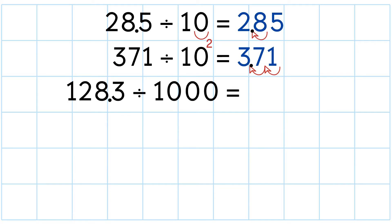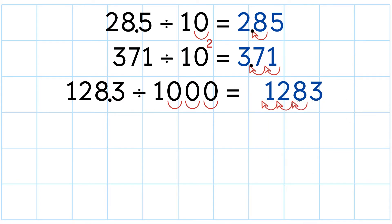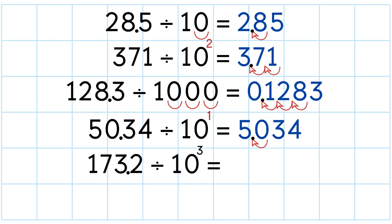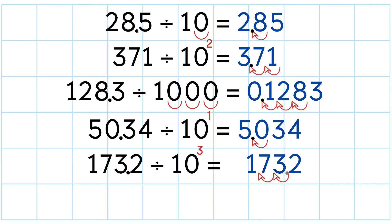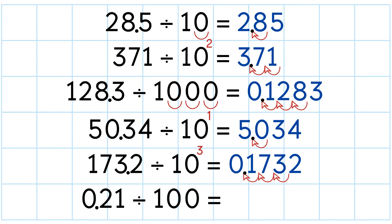128.3 divided by 1000 — 1000 has three zeros, so we move the decimal point three places to the left. 50.34 divided by 10 to the power of 1 — 1 is the exponent, so we move the decimal point one place to the left. 173.2 divided by 10 to the power of 3 — 3 is our exponent, so we move the decimal point three places to the left. 0.21 divided by 100 — we have two zeros, so we move the decimal point two places to the left.